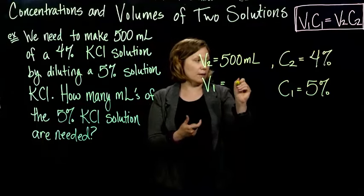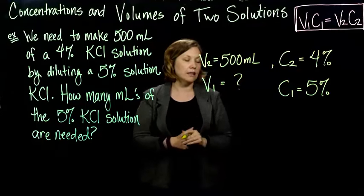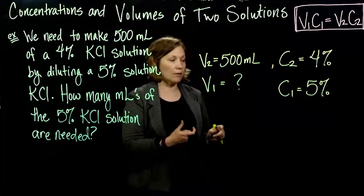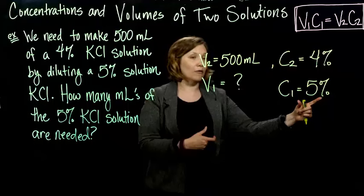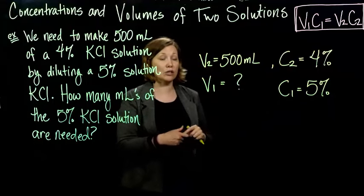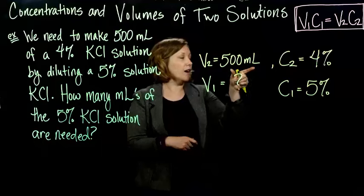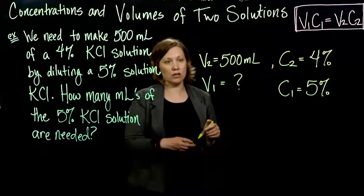So my volume that I'm trying to figure out is that first volume. So I'm trying to figure out how much of the 5% solution do I need to dilute to make 500 milliliters of a 4% solution.